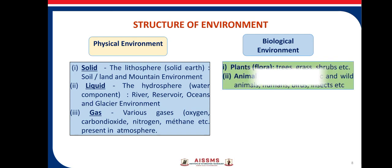What is the biological environment? All living things — plants, trees, grass, animals, domestic and wild animals, human beings, insects — that means all flora and fauna come under the biological environment.